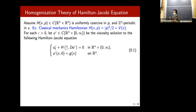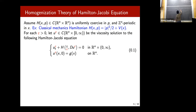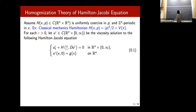Homogenization theory attempts to describe exactly this. There are two ways to view it. First: there is always an epsilon > 0, a given small scale from the problem — it can be like 10^{-10} or something like that. The equation we consider depends on the environment through x/epsilon because we see a highly oscillatory environment at scale epsilon. In practice epsilon is fixed, however it's very hard to study the problem at the fixed scale.